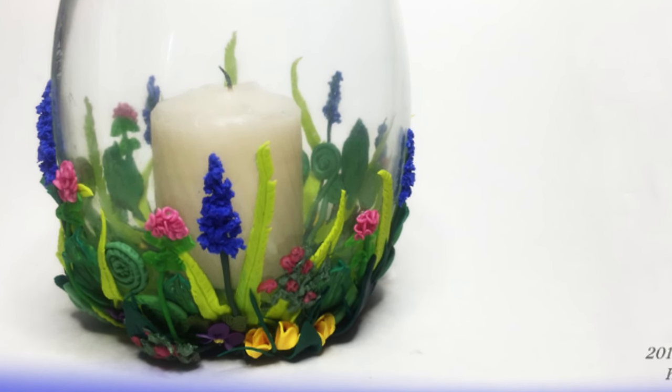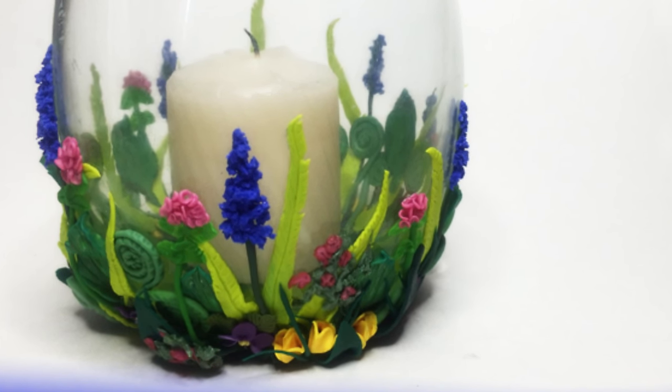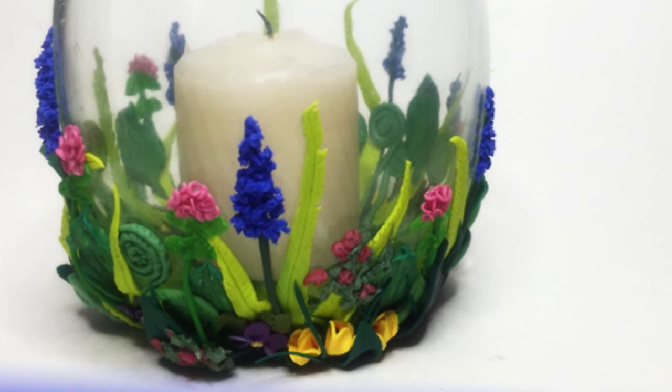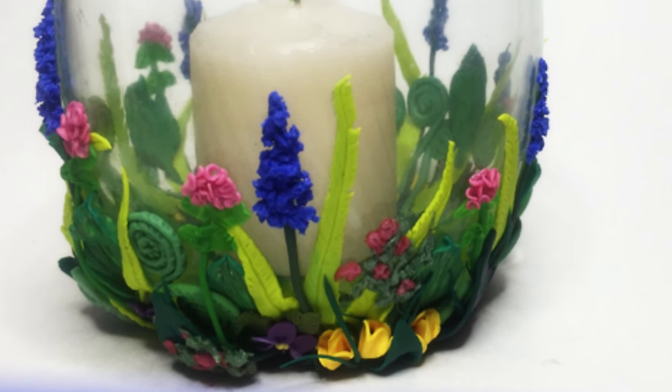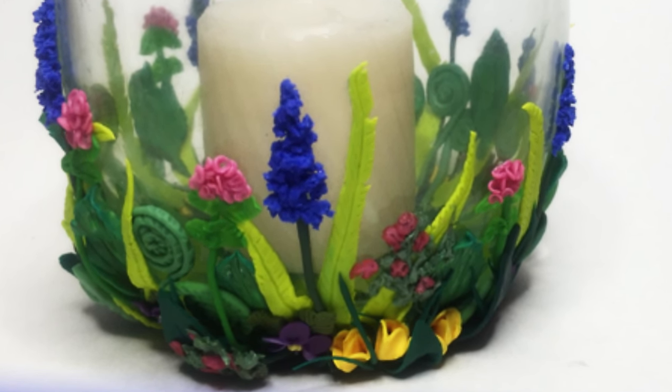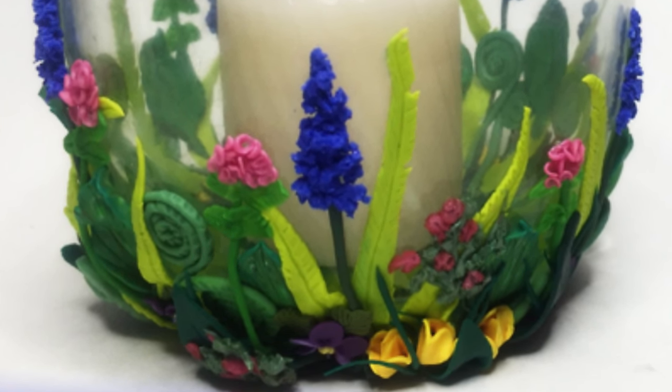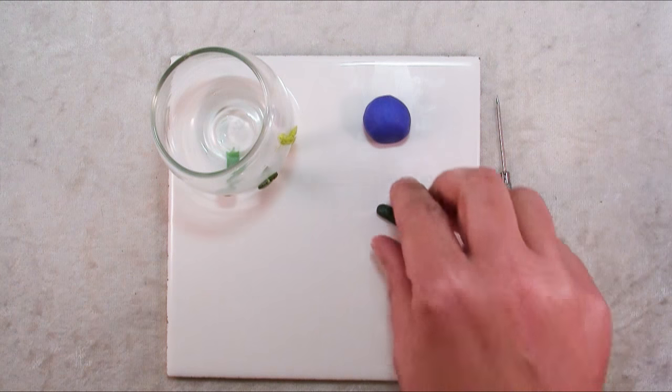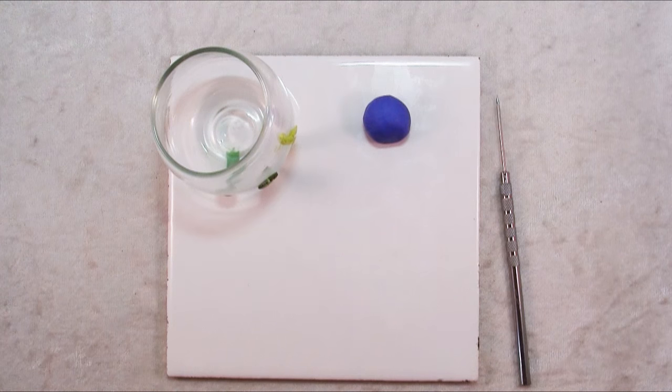Today is part two in a series on how to make this wildflower votive holder. You could certainly use these techniques to cover anything you like. In part one I showed you how to make three types of foliage and today I'm going to show you how to make two types of flowers. So the first flower we're going to make is one that looks sort of like a larkspur or salvia.